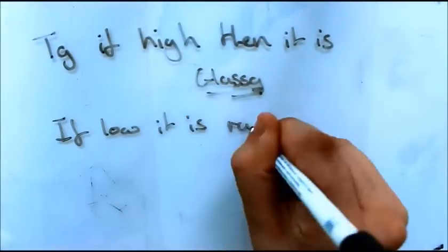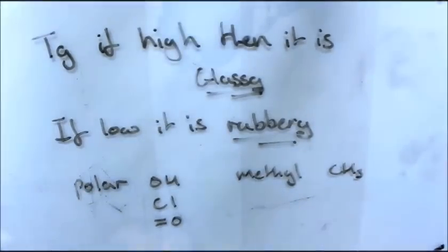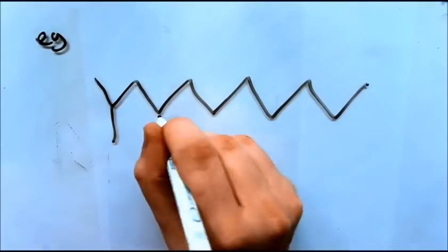Polymers can be designed so that the glass transition temperature is suitable for the specific application of the plastic. If the glass transition temperature is high, then the polymer is described as glassy. The reverse can be said for a rubbery polymer.